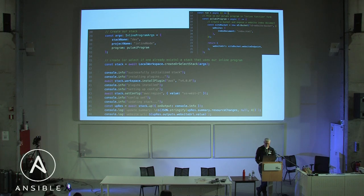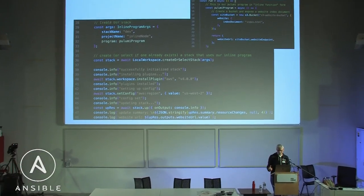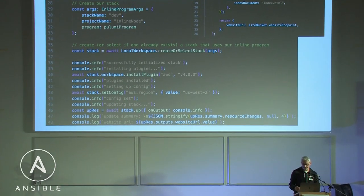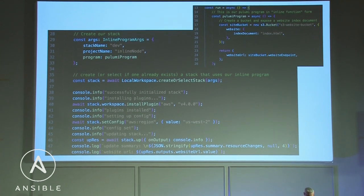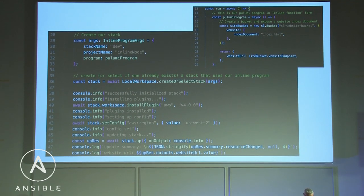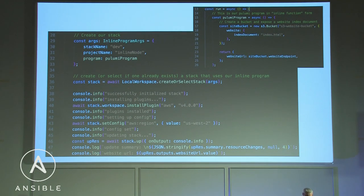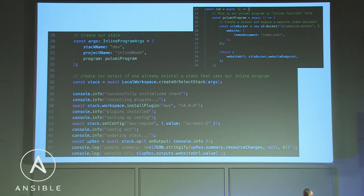To close: here's how an Automation API example looks. On the top right is a normal Pulumi program wrapped in an async function. That function is then passed on at line 32 in the left example, and you have code that simulates the same steps you'd otherwise do manually — Pulumi up, Pulumi refresh, setting config — all in code. This is taking Pulumi, adding it to whatever you want to build, and shipping that to your users or customers.